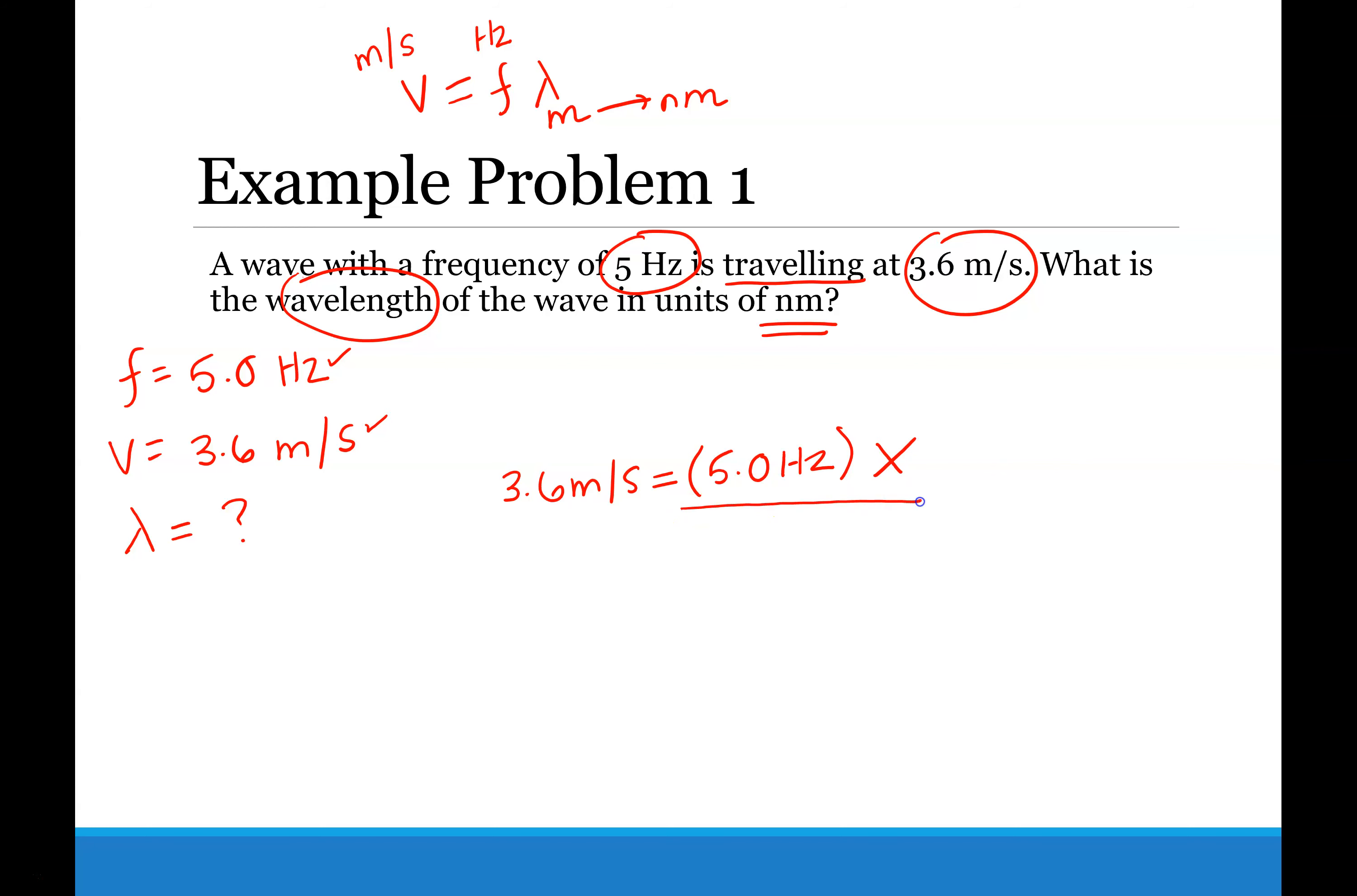So to get x by itself, you divide by 5.0 Hz, and it cancels. Divide by 5 hertz. And so in your calculator, 3.6 divided by 5.